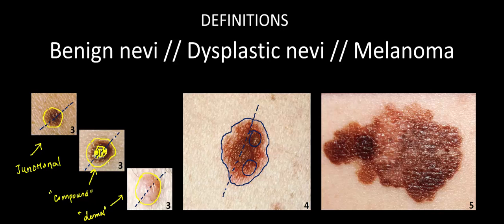Finally, looking at the far right at the malignant melanoma, it should be pretty obvious that there's a lot of irregularity. Notice the irregular borders and that this lesion is fairly asymmetric — so readily apparent that I don't even have to draw a line to visualize it. Another striking feature is the color variation: in the center of this lesion there's almost a region of whitish, very light brown, while in other regions there's a more darkly pigmented tone.